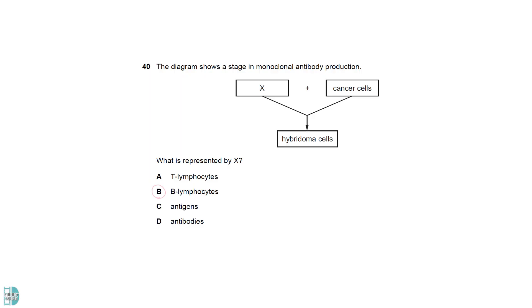B lymphocytes fuse with myeloma cells to form hybridoma cells. This is why hybridoma cells can release antibodies and undergo mitosis.